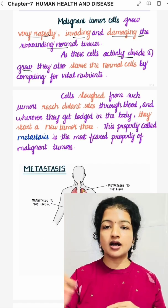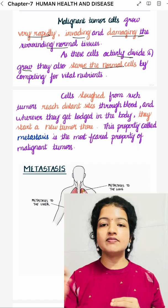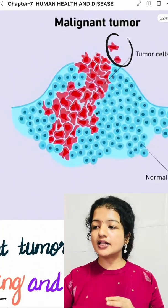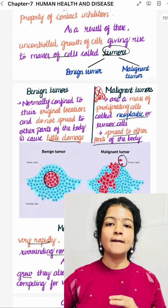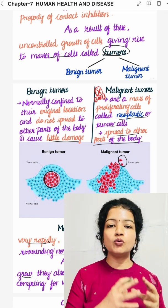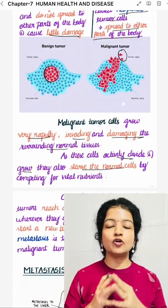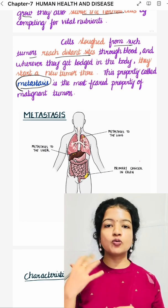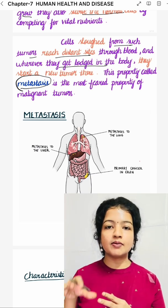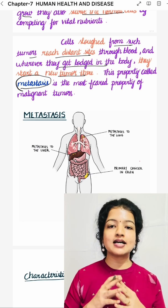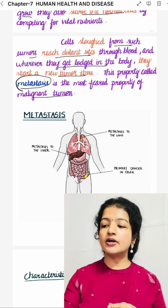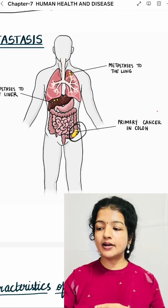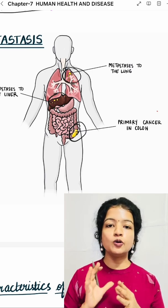These malignant tumours are rapidly growing and use up vital nutrients, causing normal cells to starve. Cells shed from such malignant tumours reach distant sites through blood. Wherever they get lodged in the body — through the blood to distant sites like liver and lungs — new tumours form there.